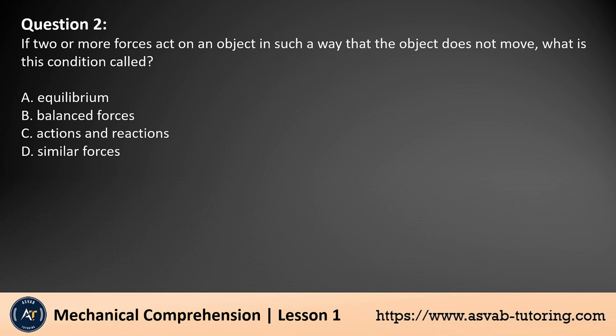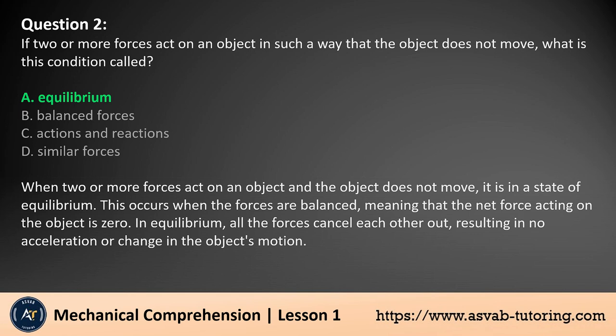Question 2. If two or more forces act on an object in such a way that the object does not move, what is this condition called? A. Equilibrium, B. Balanced forces. The answer is A. When two or more forces act on an object and the object does not move, it is in a state of equilibrium. This occurs when the forces are balanced, meaning that the net force acting on the object is zero. In equilibrium, all the forces cancel each other out, resulting in no acceleration or change in the object's motion.